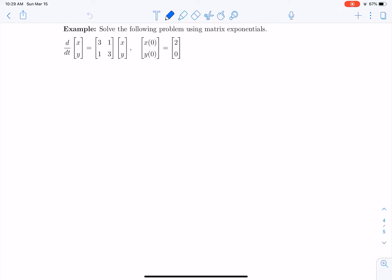So here we have d/dt of [x, y] is the matrix [3, 1; 1, 3] times [x, y]. We have an initial condition of [2, 0].